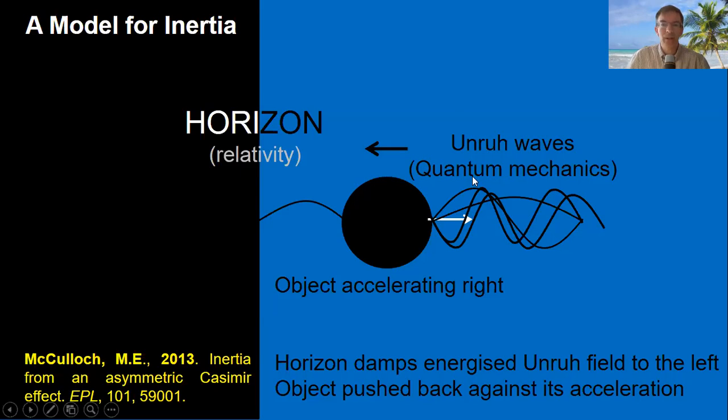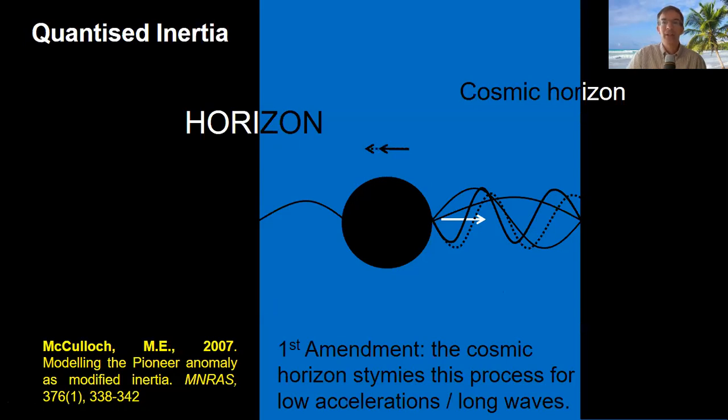The new part in quantized inertia is that, as in the Casimir effect, this virtual radiation is damped between the object and the horizon. So there's only one wave here, there are lots of waves on this side. This means that more radiation is banging into the object from this direction, so it gets pushed back against its acceleration. And I managed to show that this looks like inertial mass, which opposes whatever acceleration you give an object.